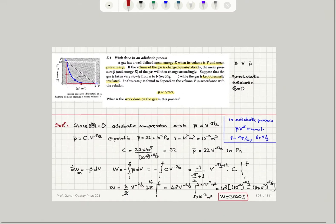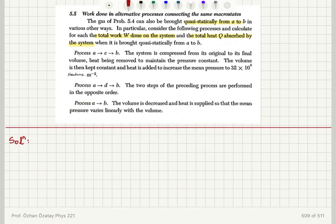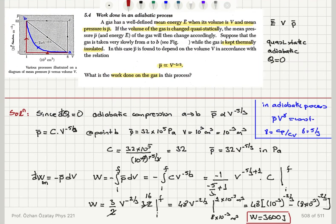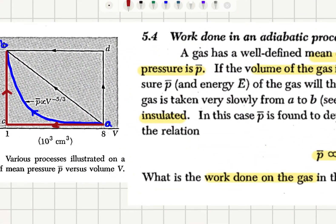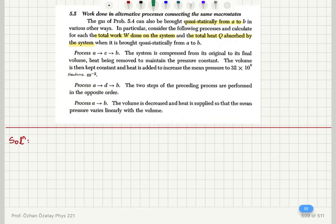Another alternative process is ADB, where the two steps of the preceding process are performed in the opposite order. That is the green path. And finally I have the direct path A to B.